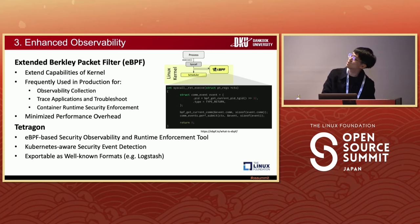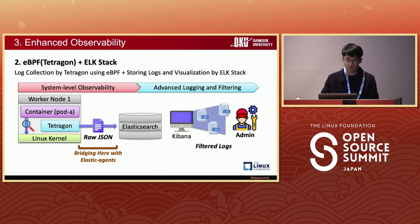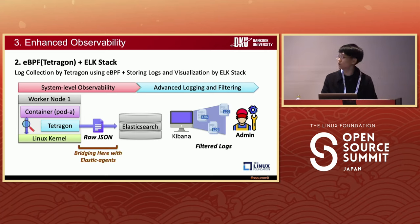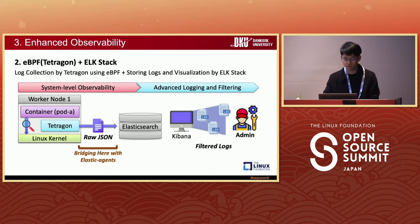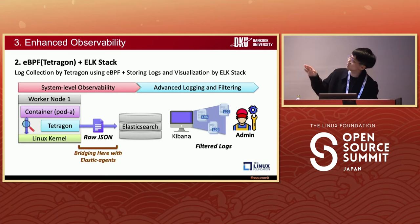With eBPF, Tetragon, and ELK combined, we can collect detailed system logs via Tetragon and store them in Elasticsearch, then visualize them in Kibana. Tetragon collects system information as JSON, and we bridge that output into the ELK pipeline — that part was fairly straightforward.